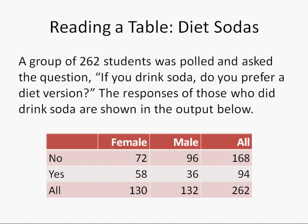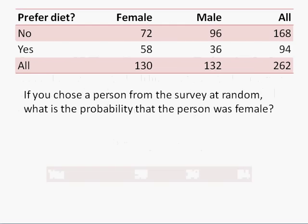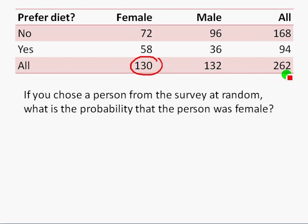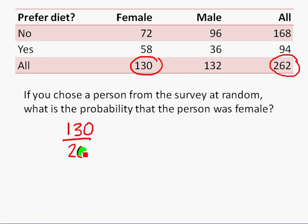Let's look at another example. We have people who were surveyed about drinking diet sodas: if you drink soda, do you prefer a diet version? We have females and males. If we pick a survey respondent at random, what's the probability the respondent was female? The females were 130, and there were 262 in all who were surveyed, so we get 130 out of 262, which as a decimal is .4962.